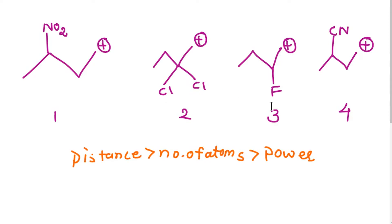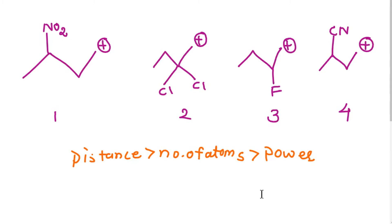In examples 2 and 3, Chlorine and Fluorine are at the same lesser distance from the carbocation compared to examples 1 and 4. Since the distance is equal, we look at the number of atoms. Chlorine has 2 atoms and Fluorine has only 1. So Chlorine withdraws electrons more, making the Chlorine carbocation more unstable than the Fluorine one.